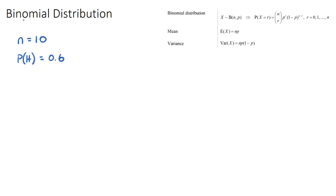In a binomial distribution, 'bi' stands for two, so we're always going to have two probabilities: a success probability — in this case heads — and the opposite, the failure, which is just one minus the success probability. So in this example the failure probability is 0.4.